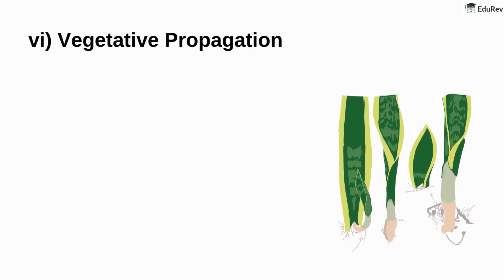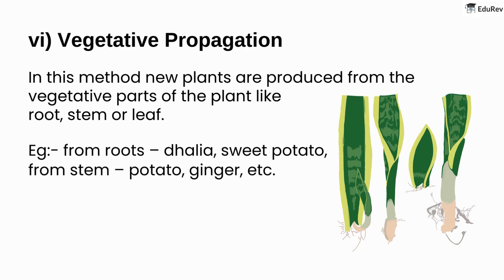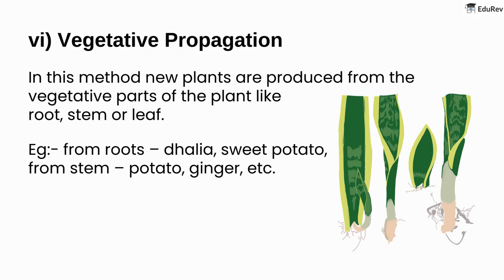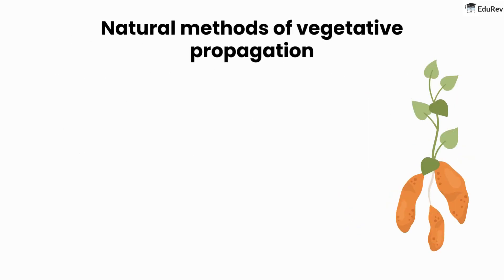Vegetative propagation: in this method, new plants are produced from the vegetative parts of the plant like root, stem, or leaf. For example, from roots: dahlia, sweet potato; from stems: potato, ginger, etc. Vegetative propagation usually involves the growth and development of one or more buds present on the old part of the plant to form a new plant. Let's look at a few natural methods of vegetative propagation.